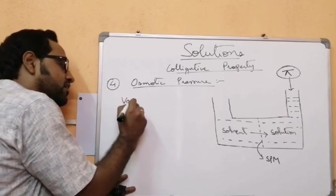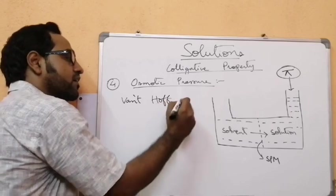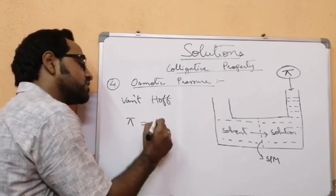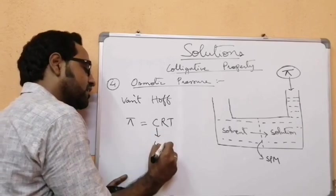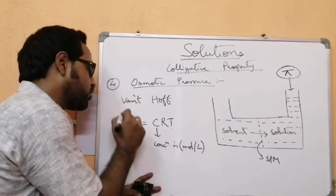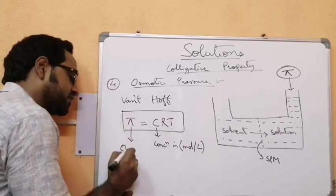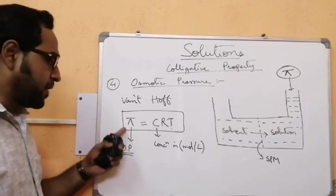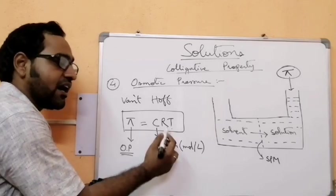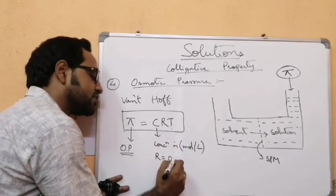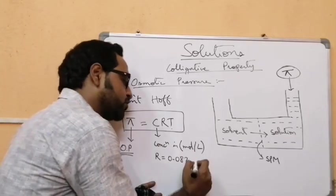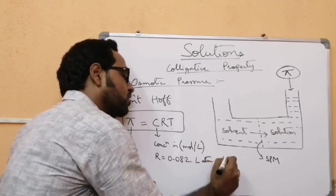Van't Hoff showed that osmotic pressure π = CRT, where C is the concentration in moles per liter, R is the gas constant with value 0.082 L·atm·mol⁻¹·K⁻¹, and T is the temperature in absolute scale (Kelvin). π is expressed in units of atmosphere or bar. Please memorize this value of R.